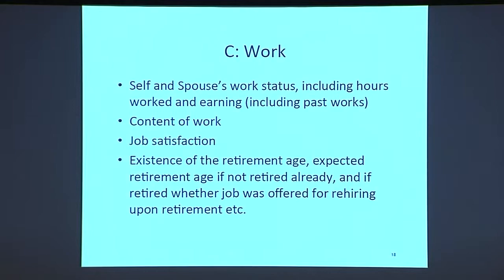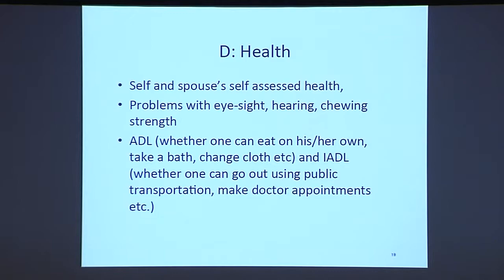Section C on work includes self and spouse's work status, hours worked, earnings, content of work, job satisfaction, existence of retirement age, expected retirement age if not yet retired, and whether a job was offered for rehiring upon retirement. Section D on health includes self and spouse's self-assessed health, problems with eyesight, hearing, and chewing strength, activity of daily living (ADL) — whether one can eat, bathe, change clothes — and instrumental activity of daily living (IADL), such as using public transportation or making doctor appointments. These are common across HRS-type surveys.